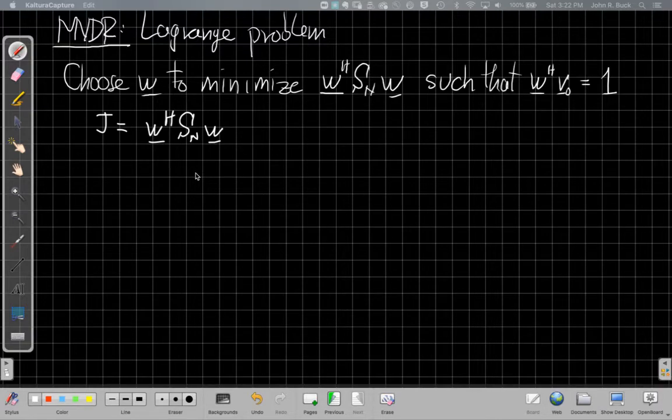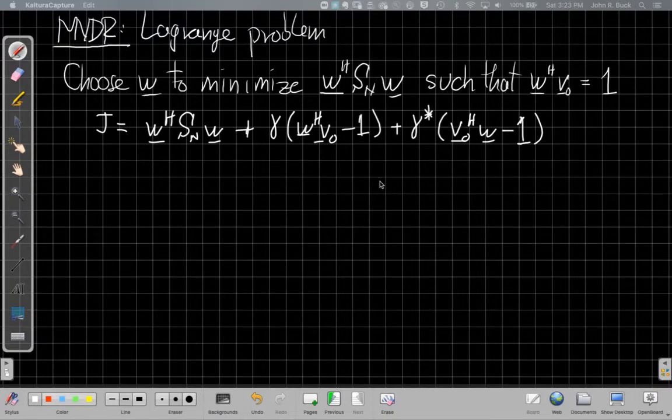But to do that, we also have to incorporate the constraint, or two times the real part of the constraint, which we usually do is the constraint plus its conjugate. So let's add those terms in. Okay, so these two terms here are two times the real part of the constraint, where this gamma is our Lagrange multiplier, our dummy variable for the Lagrange multiplier.